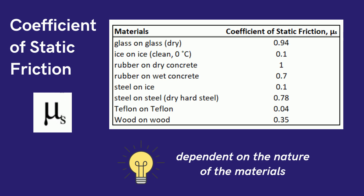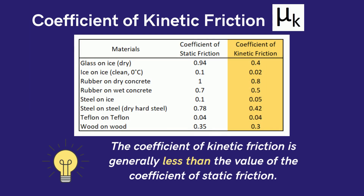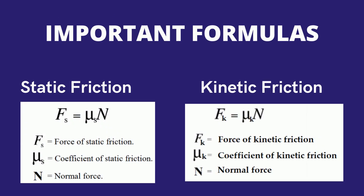The coefficient of static friction is defined as the ratio of the force required to move sliding surfaces over each other and the force holding them together. It is dependent on the nature of the material. The coefficient of kinetic friction is denoted by the Greek letter mu with the subscript k. The coefficient of kinetic friction is generally less than the value of the coefficient of static friction.